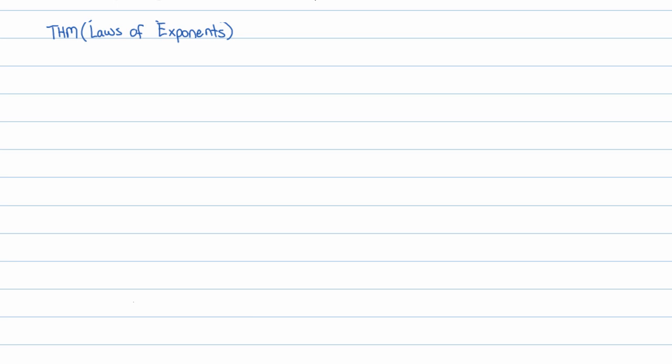And again, since this is a review, I'm not really going to spend too much time proving these. The proofs are done in a separate video. But recall the laws of exponents. If you have a base b raised to the mth power and another number b raised to the nth power, that's going to be b to the m plus n. You add exponents because you have m of them in the first group and n of them in the second group.